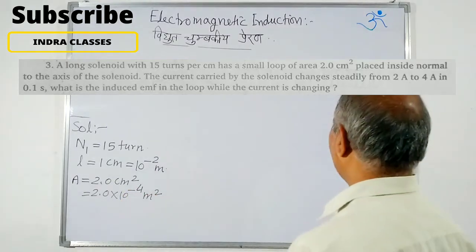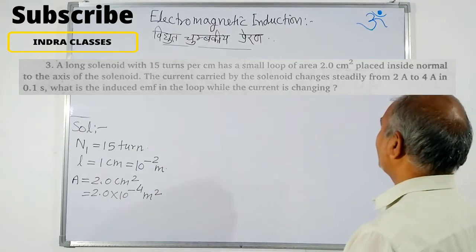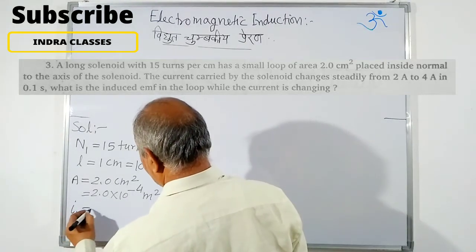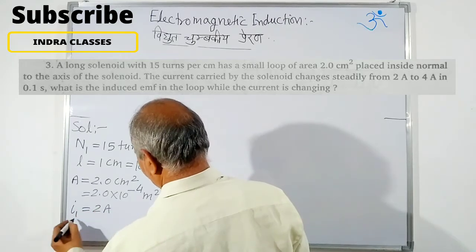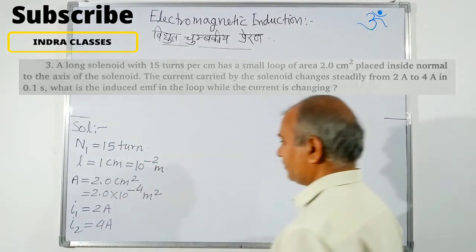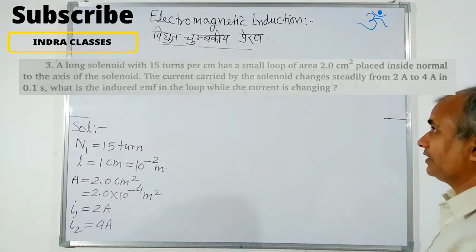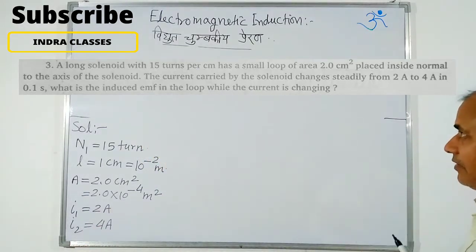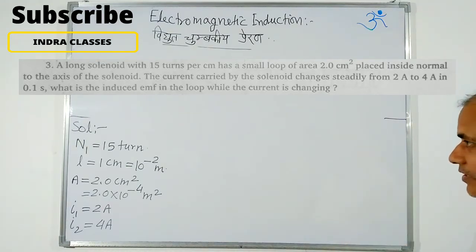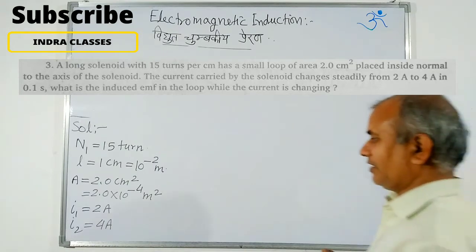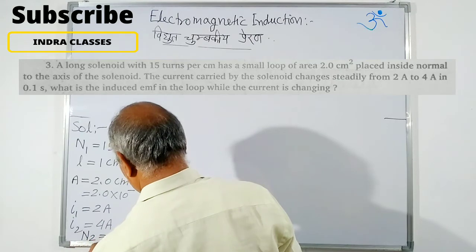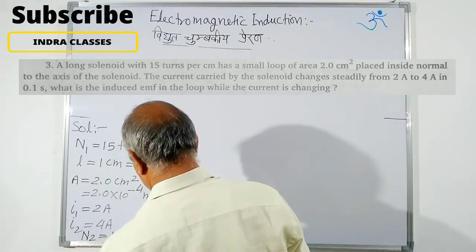Current changes from 2 A to 4 A. So I1 = 2 A, I2 = 4 A. A small coil is placed perpendicular to the solenoid with N2 = 1 turn.